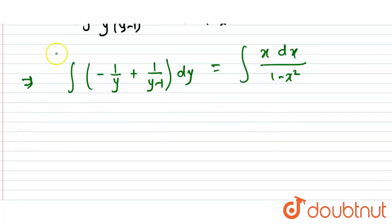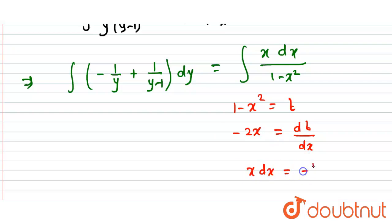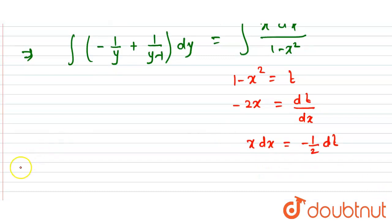For the right-hand side integral, we use the substitution: let t = 1 - x². Differentiating with respect to x gives -2x = dt/dx, so we can replace x dx with -½ dt.